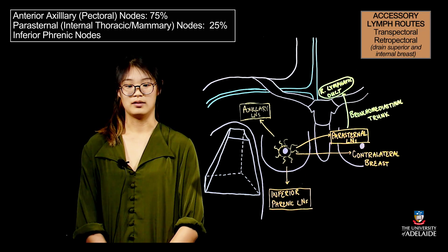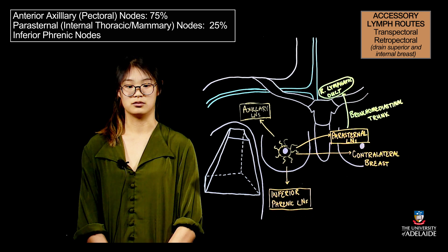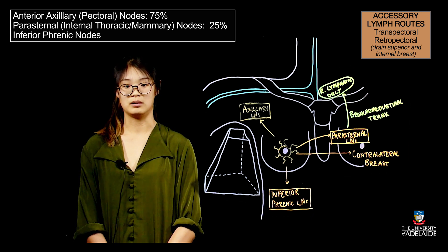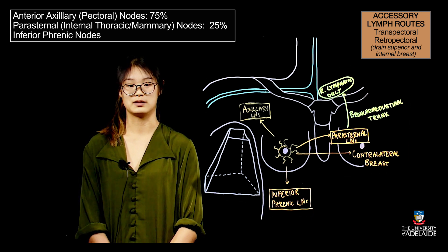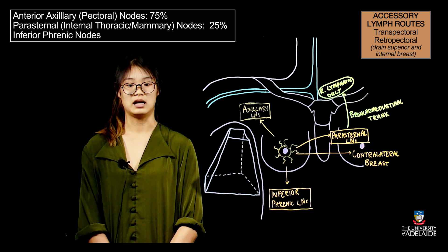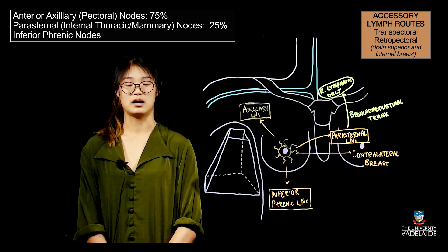Another pair of important routes are the transpectoral and retropectoral routes which pass through and between the pectoralis muscles respectively. These drain directly to the apical lymph nodes which sit on the axillary vein.